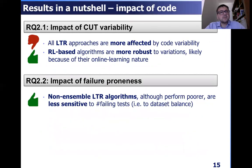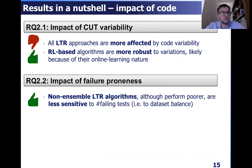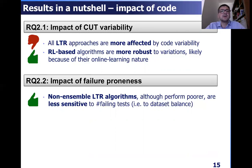In terms of the impact of the code under test, we investigated the impact of code variability and show that all LTR approaches are more affected by code variability, while reinforcement learning algorithms, which perform overall, are more robust to variations of the code because they are online learning algorithms. So they can be useful when the code is subject to high variability.